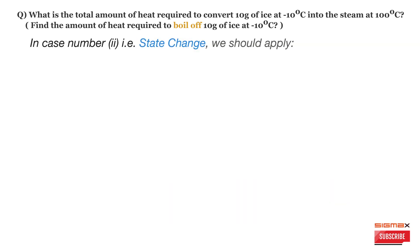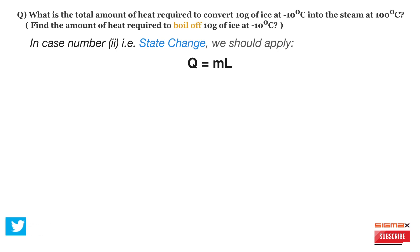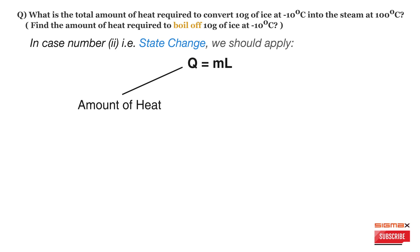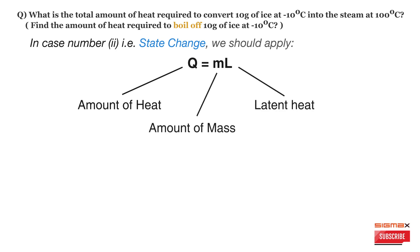In case number 2 — that is, state change — we apply the formula Q = mL to calculate the amount of heat required for the change. Here, Q represents the amount of heat, m represents mass, and L represents the latent heat.